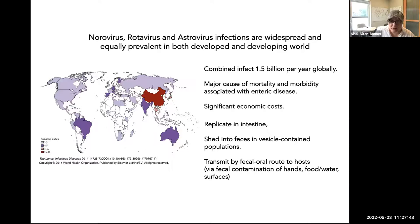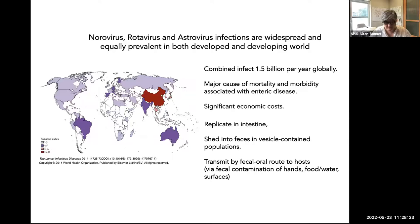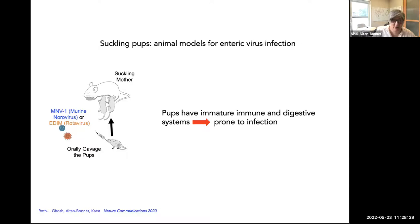These viruses are the major cause of mortality and morbidity associated with enteric disease globally and incur significant economic costs. As I showed you, these viruses replicate in the intestine, shed into feces in vesicle-contained populations, and are accepted as transmitting via the fecal-oral route — shed in feces, contaminating hands, food, or water, then entering a new host orally to begin the cycle anew.